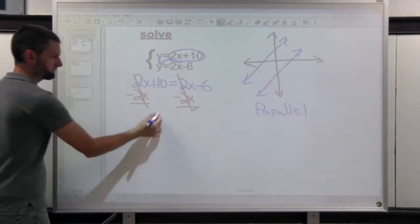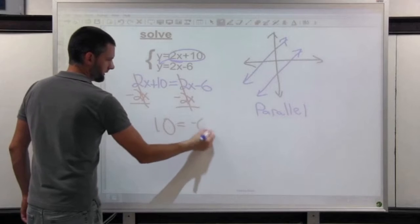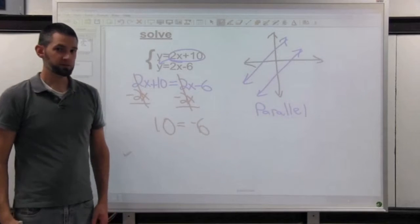What do you know? The x's cancel out on both sides. I get 10 equals negative 6. That's not true.